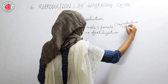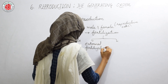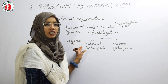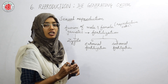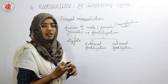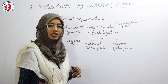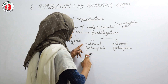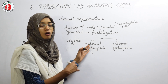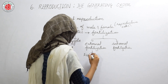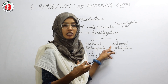Fertilization is of two types: external fertilization and internal fertilization. In external fertilization, the female releases gametes in the water and the male also releases gametes in the water, and those gametes fuse in the water — that means the fusion takes place outside the body of the living organism. This type of fertilization can be seen in fishes and frogs.